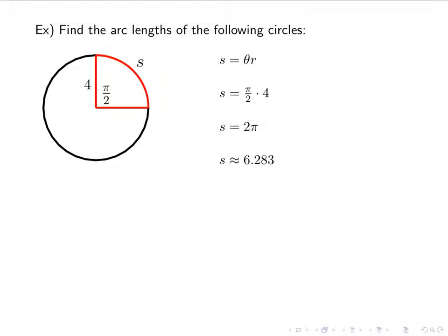We'll do a couple of examples. Here is a circle with a segment of π/2 radians and a radius of 4, and we want to find the arc length. So s equals θr. Theta is already in radians, so I just plug it in: π/2 times 4, which is 2π. That is a perfectly fine answer, whatever the units are - feet, inches, meters. I could also plug it into the calculator, and I'll get roughly 6.283.